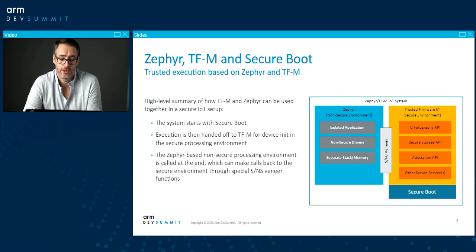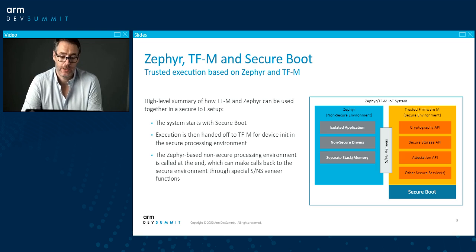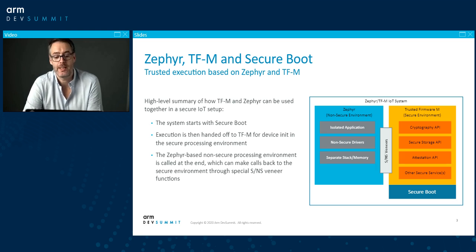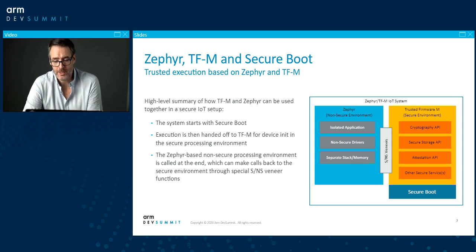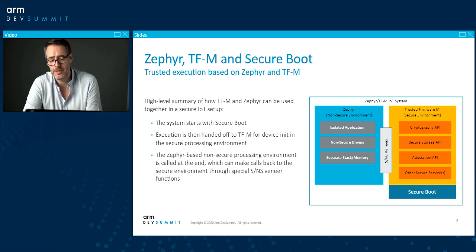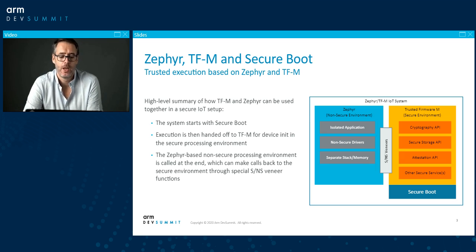TF-M implements secure services and device initialization first happens in the secure processing environment, shown in orange. Once initialized, execution is handed off to the non-secure processing environment, where Zephyr RTOS runs. For anything security-related, calls are made between the non-secure Zephyr image and the secure TF-M image through a shared memory space, managed in hardware on ARM V8M cores like the M33 using ARM TrustZone features.